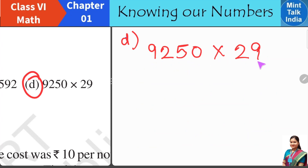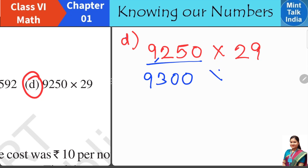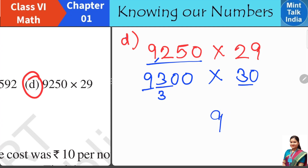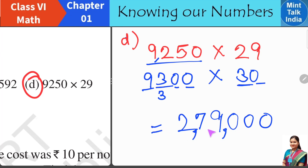Question 3D: 9250 multiplied by 29. For 9250, the 250 is closer to 300, so the whole number rounds to 9300. For 29, adding 1 makes it 30, which is much easier to multiply. Now multiply 9300 by 30: mentally, 9 times 3 is 27, 3 times 3 is 9, giving 279; then add three zeros and one more zero for 30 — that is four zeros total — giving 2,79,000 as the estimated product.